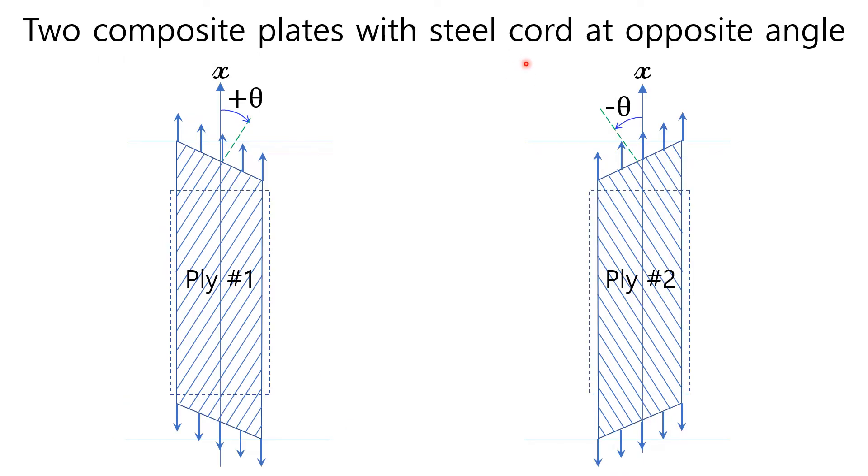Let's think about the two composite plates with steel cord at the opposite angle under the tension force. When they are individually under the same tension force, they deformed to the parallelogram shapes, but with different skewed shapes, like in this picture. They are in plane deformation.